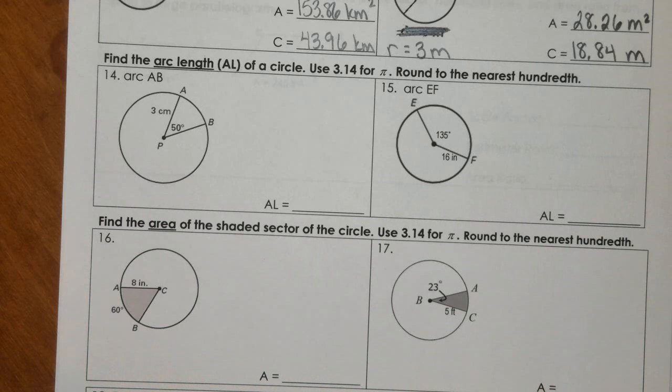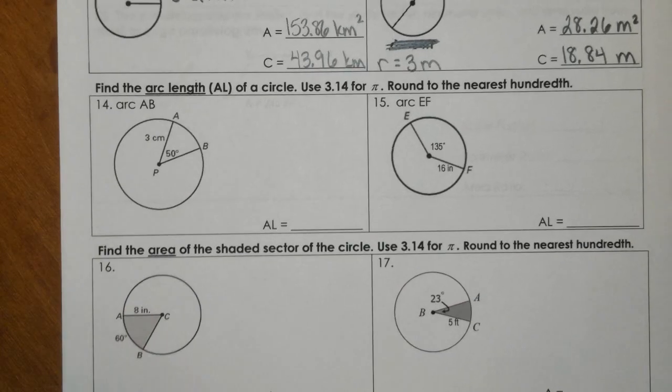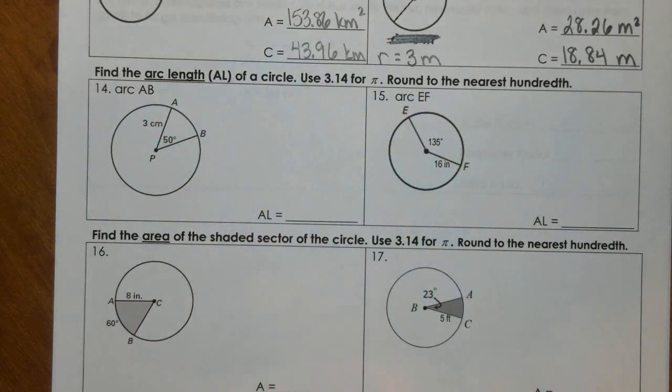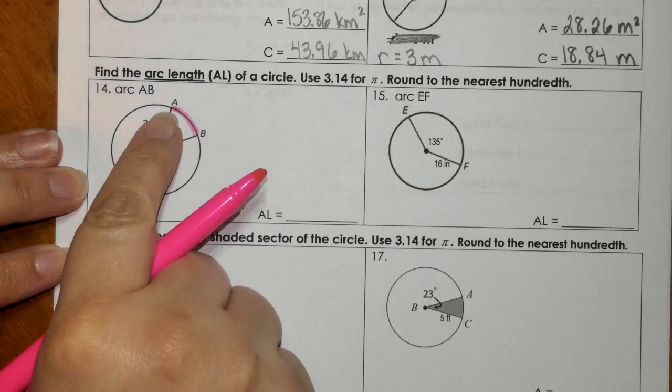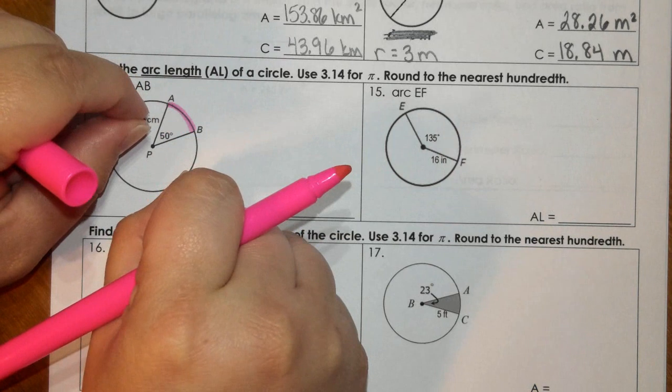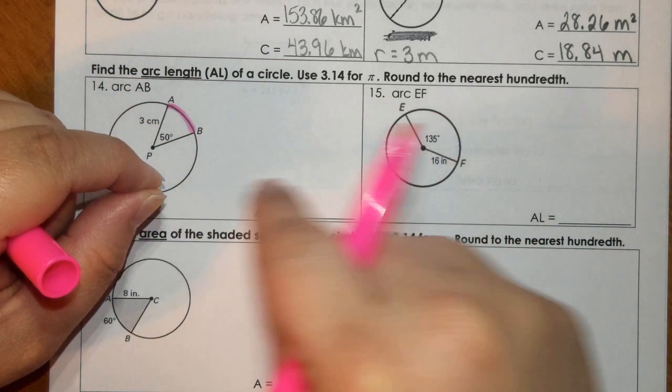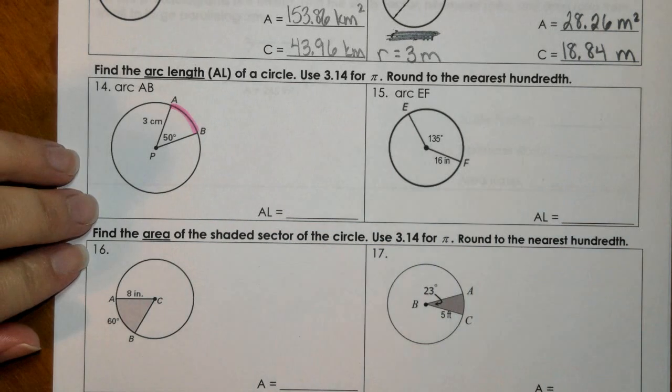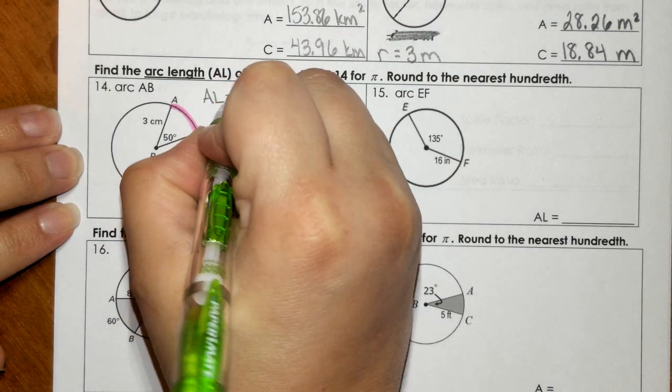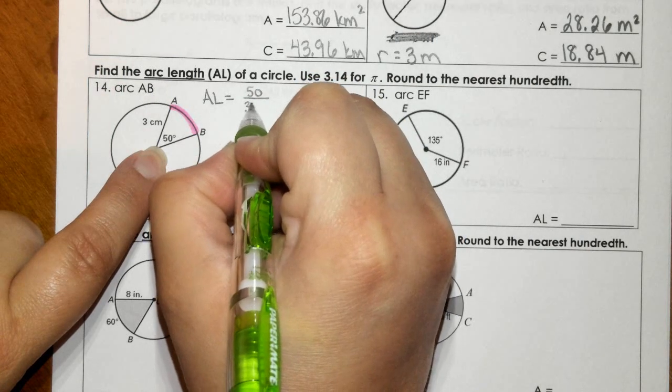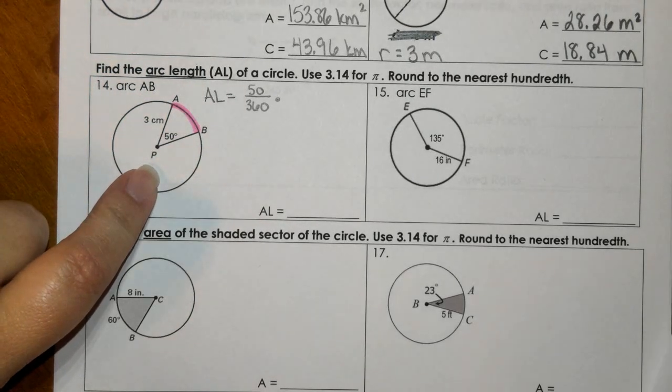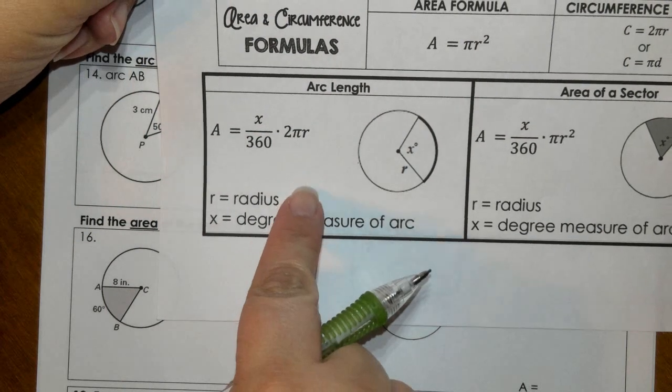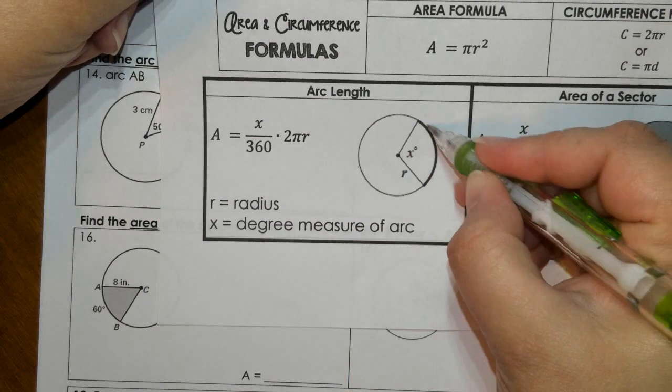Now, more for the newer stuff of this unit. Number 14, it says find the arc length of a circle. So we're finding arc AB. So what that means is you're finding in centimeters, what would this measure? If I had a piece of string from A to B on the curve, I took the piece of string and laid it straight out, what would it measure on a ruler? So how I do that, I say that the arc length is the angle measure over 360 times 2πr. If you're looking at the formula sheet, you're looking for the arc length one.